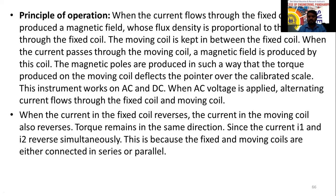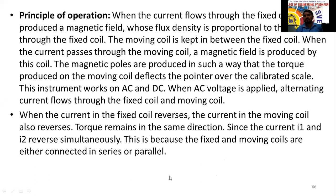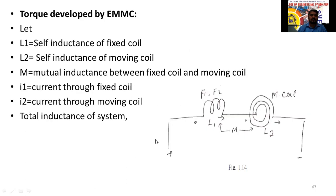The torque remains the same in direction because the current direction in both windings changes simultaneously — since I1 and I2 reverse at the same time, the torque direction remains unchanged. This is because the fixed and moving coils are connected either in series or parallel, so both receive the same supply simultaneously.